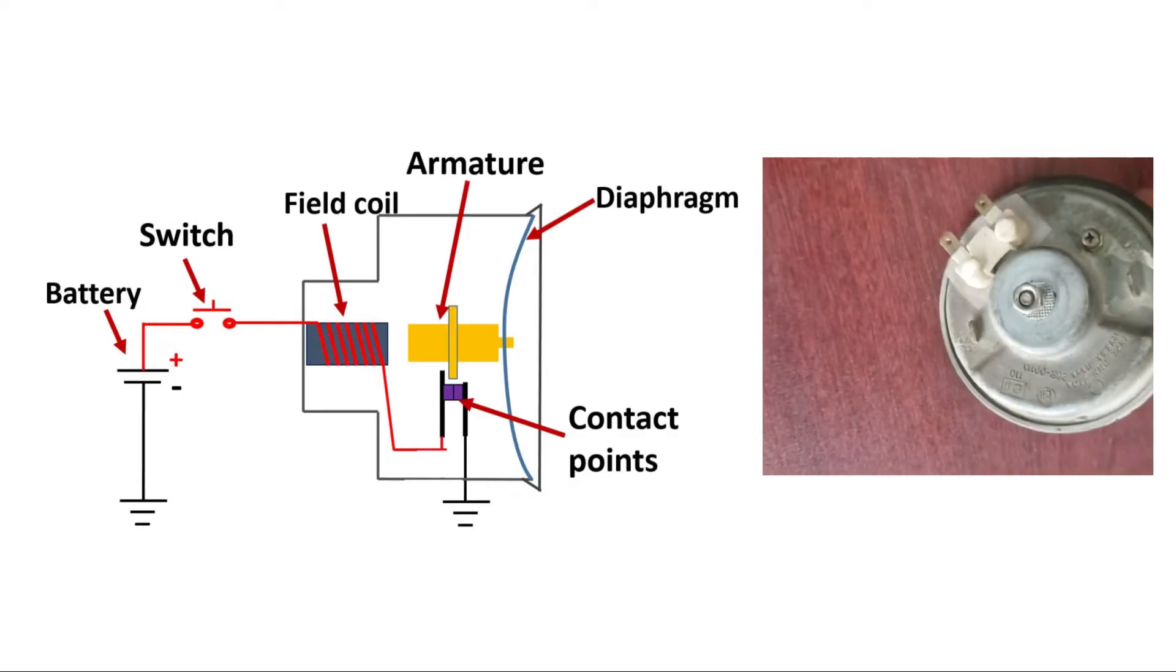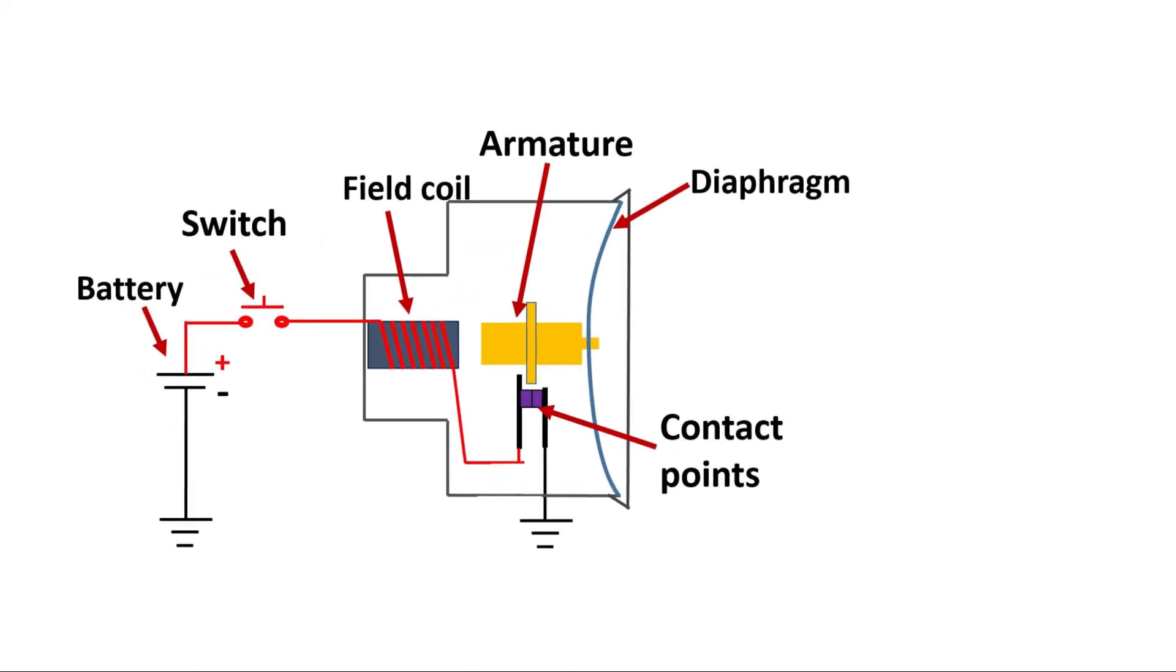The contact points are wired in series with the field coil with one of the points attached to the armature.